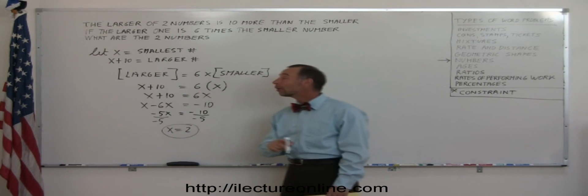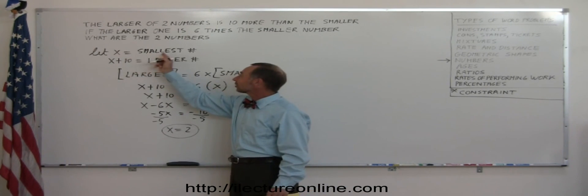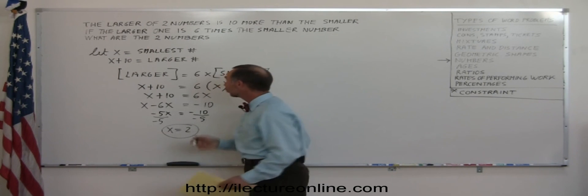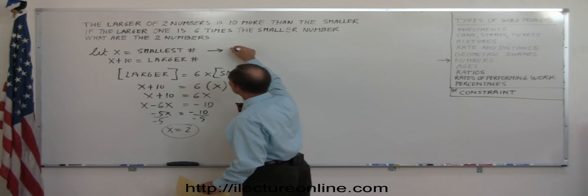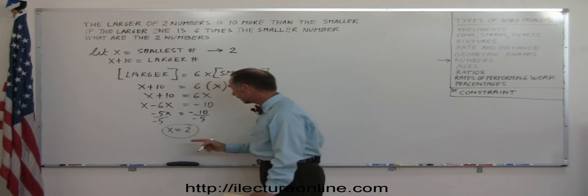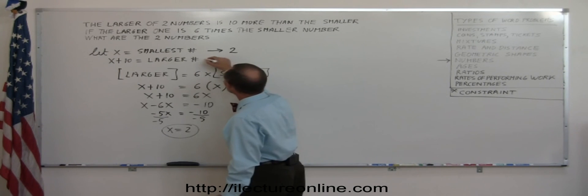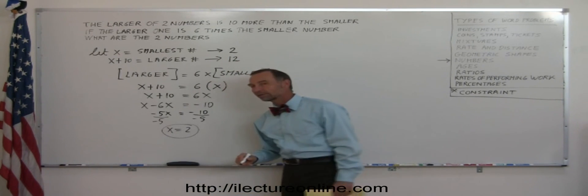Now we go back and see what we defined our numbers as. Since x was defined as the smallest number, the smallest number is two. And since x plus ten represents the larger number, well, if x is two, two plus ten means the larger number is twelve.